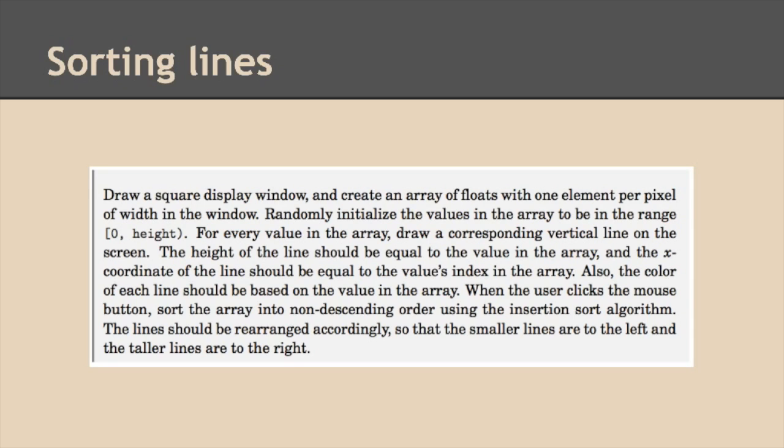Importantly, the color of each line is going to be based on the value of the array as well. Then, when the user clicks the mouse button, we're going to do an insertion sort on that array. And that will cause the lines to be redrawn accordingly, so that the smaller lines will be on the left and the taller ones are on the right.